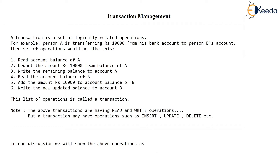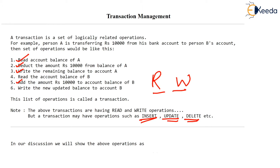And basically increment and decrement, read and write — that's it. A typical transaction in DBMS can contain operations such as insert, update, delete, and alter. Many such operations can be there. But in most of this topic, we will be learning about read and write, and maybe a few types of updates — that is, increasing something or decreasing something.